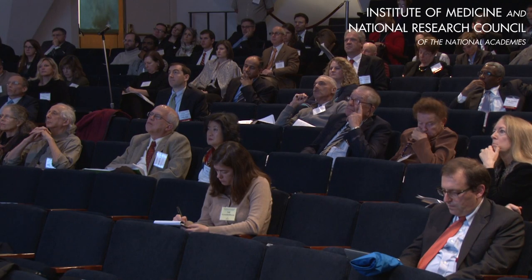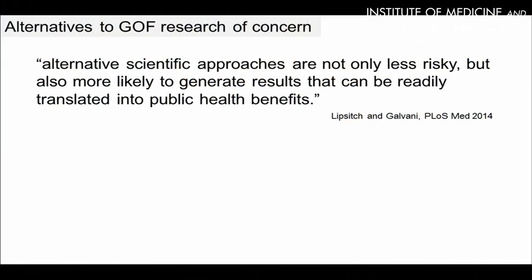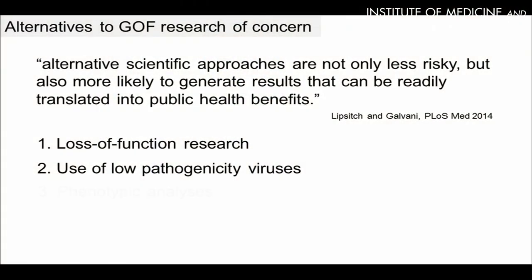What about alternatives to gain-of-function research of concern? Mark Lipsitch states that alternative scientific approaches are not only less risky, but also more likely to generate results that can be readily translated into public health benefits. I can think of three types of alternatives: first, loss-of-function research; second, the use of low pathogenicity viruses; and third, phenotypic analysis.